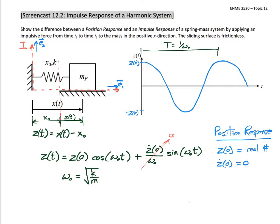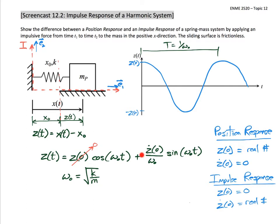Now let's shift gears into the impulse response. With an impulse response, we set our initial position equal to zero and then apply an initial speed z-dot to the system. The reason this is called an impulse response is because we're going to use an impulsive force to generate this z-dot term. This gives us a sine wave that oscillates between a magnitude of z-dot over omega-naught and negative z-dot over omega-naught, beginning at position z equals zero.